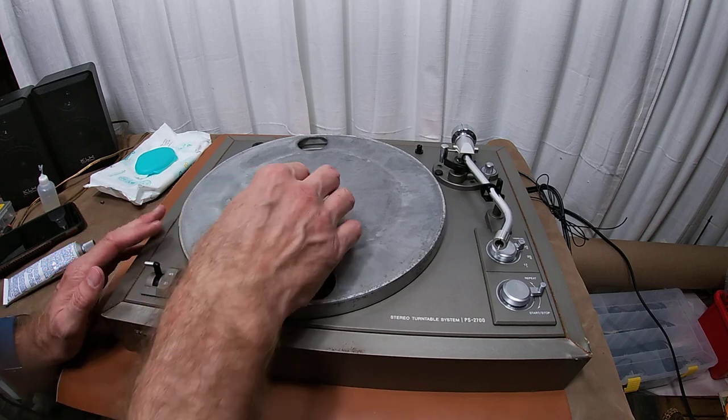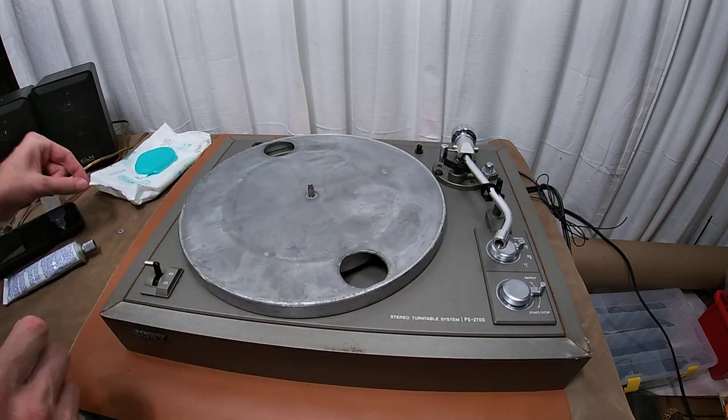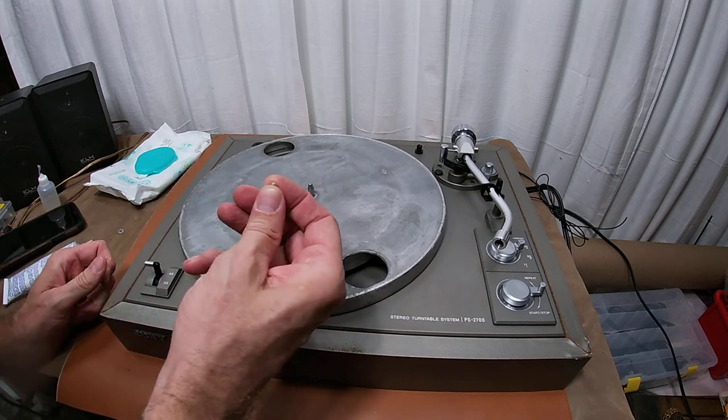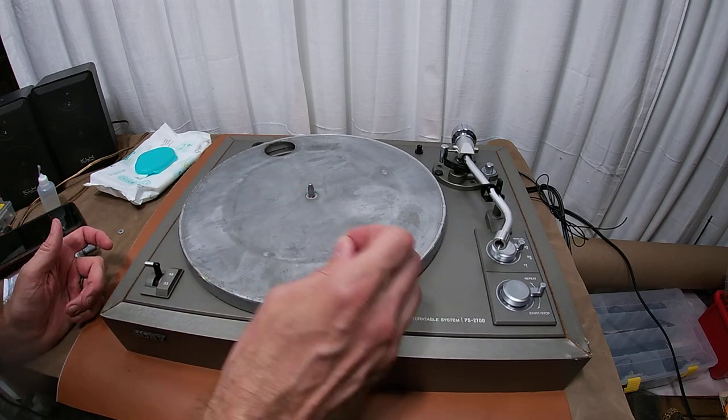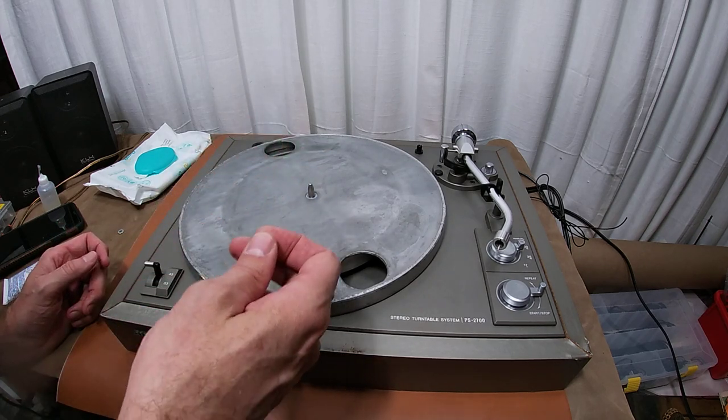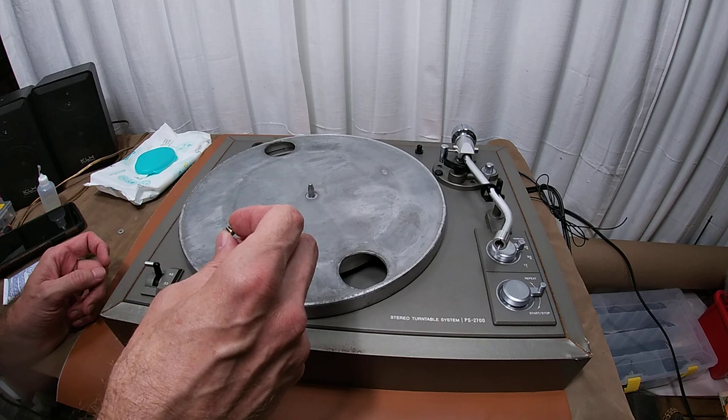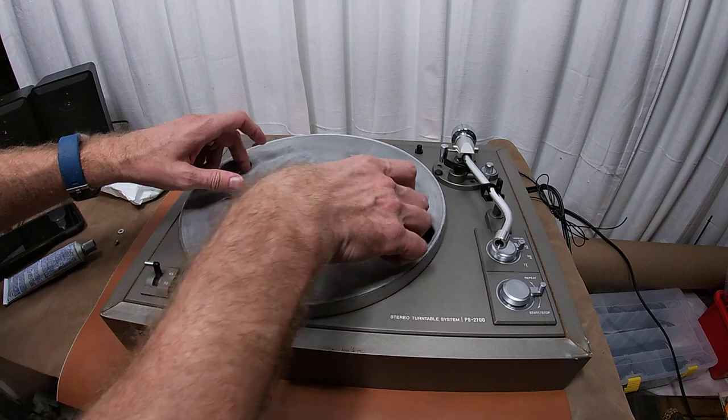So now that you have all of this done, you do at least need to set this screw back in there. You don't have to tighten it. Actually, if you do tighten it all the way down, it'll actually hit the spindle and keep the spindle from moving. So you do have to set it in there loosely and I would go ahead and put it in because otherwise your lubricant is just going to dry out.